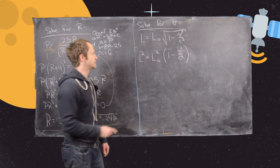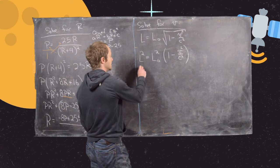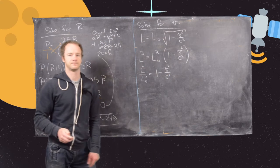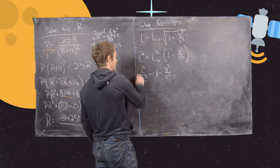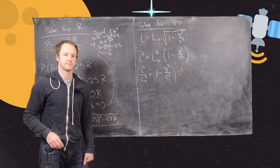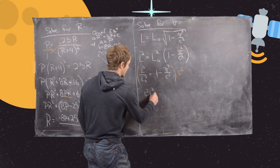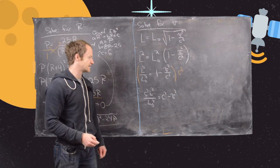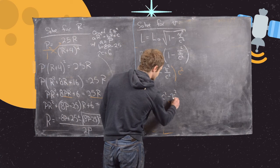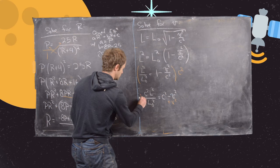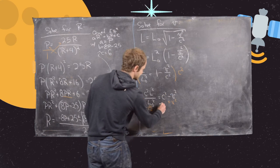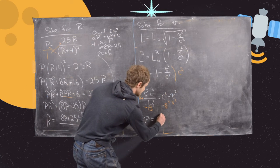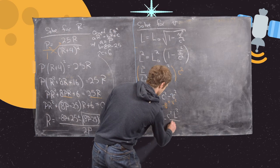Now we can solve for V. First, divide both sides by L₀ squared: L squared over L₀ squared equals 1 minus V squared over C squared. Then multiply through by C squared to clear fractions: C squared L squared over L₀ squared equals C squared minus V squared. Adding V squared to both sides and subtracting the big term gives V squared equals C squared minus C squared L squared over L₀ squared.